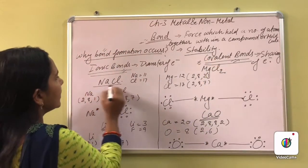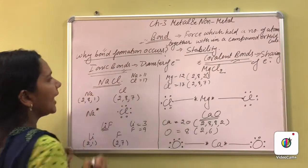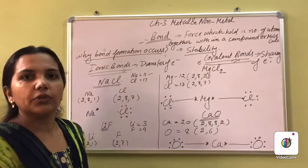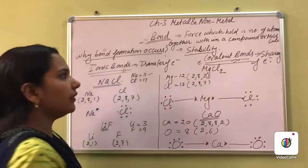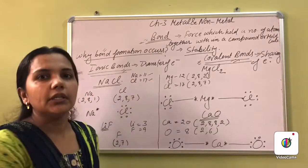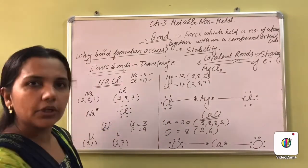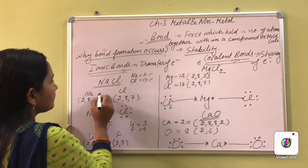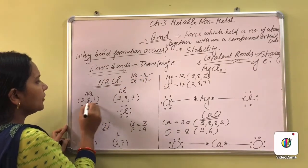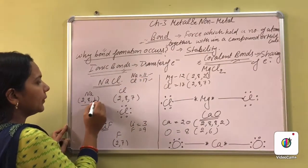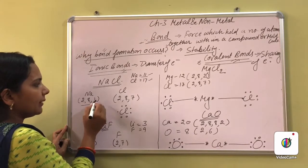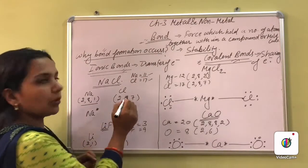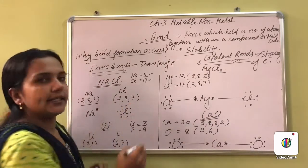Let's take the example of NaCl — sodium chloride. The atomic number of sodium is 11 and atomic number of chlorine is 17. When we write their electronic configurations: sodium is 2, 8, 1 — and chlorine is 2, 8, 7. The outermost shell of sodium has only 1 electron, and chlorine has 7 electrons in its outermost shell.